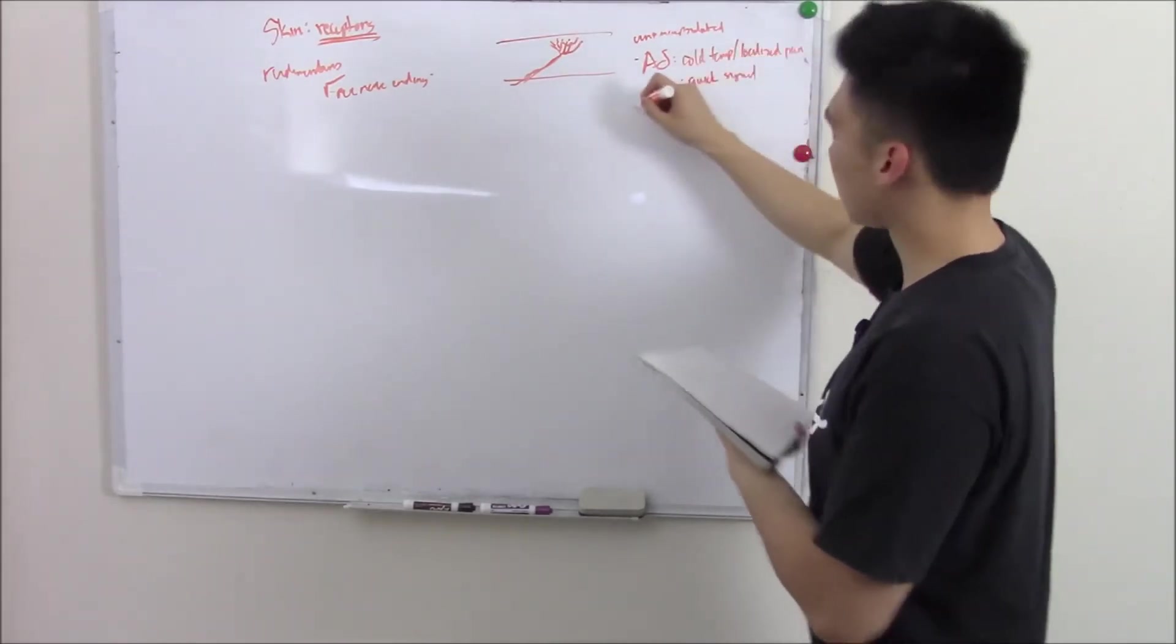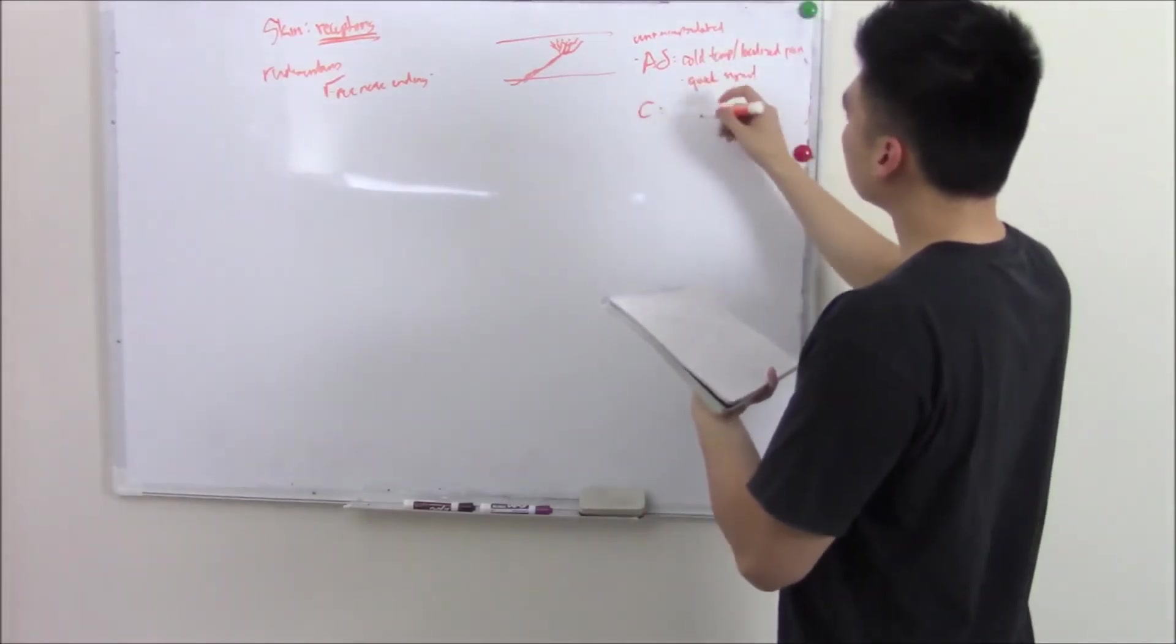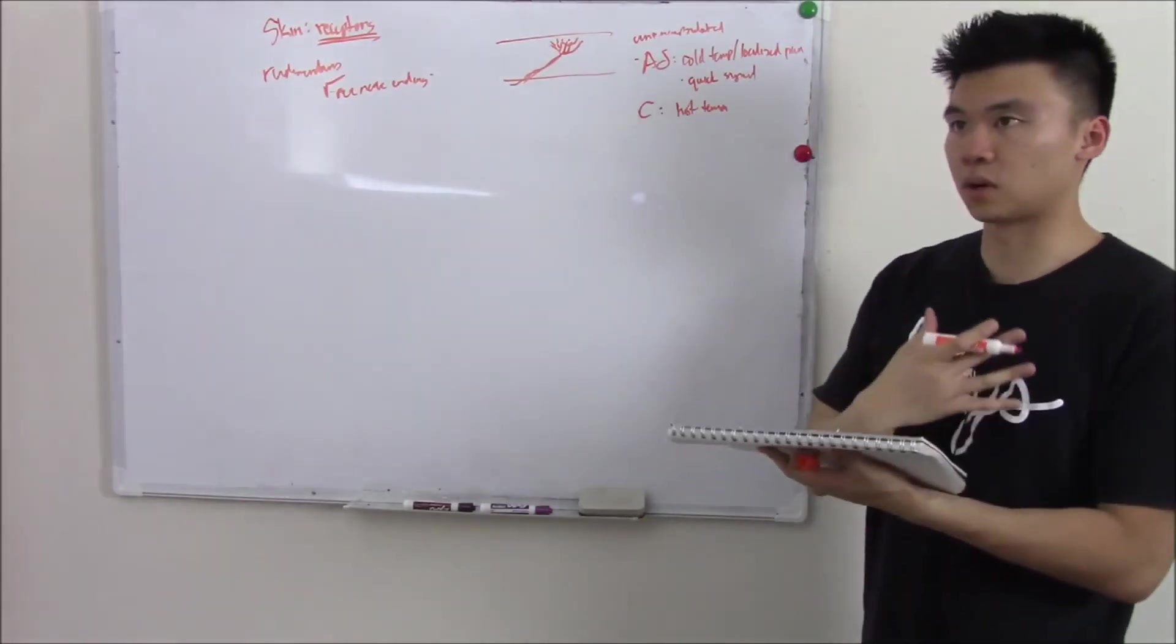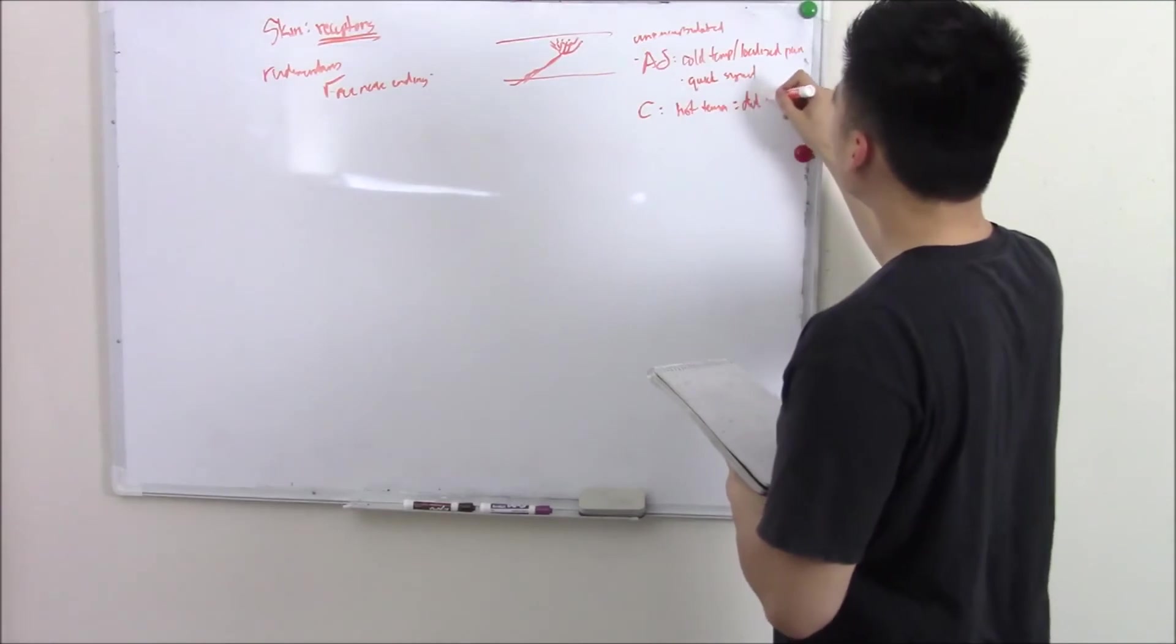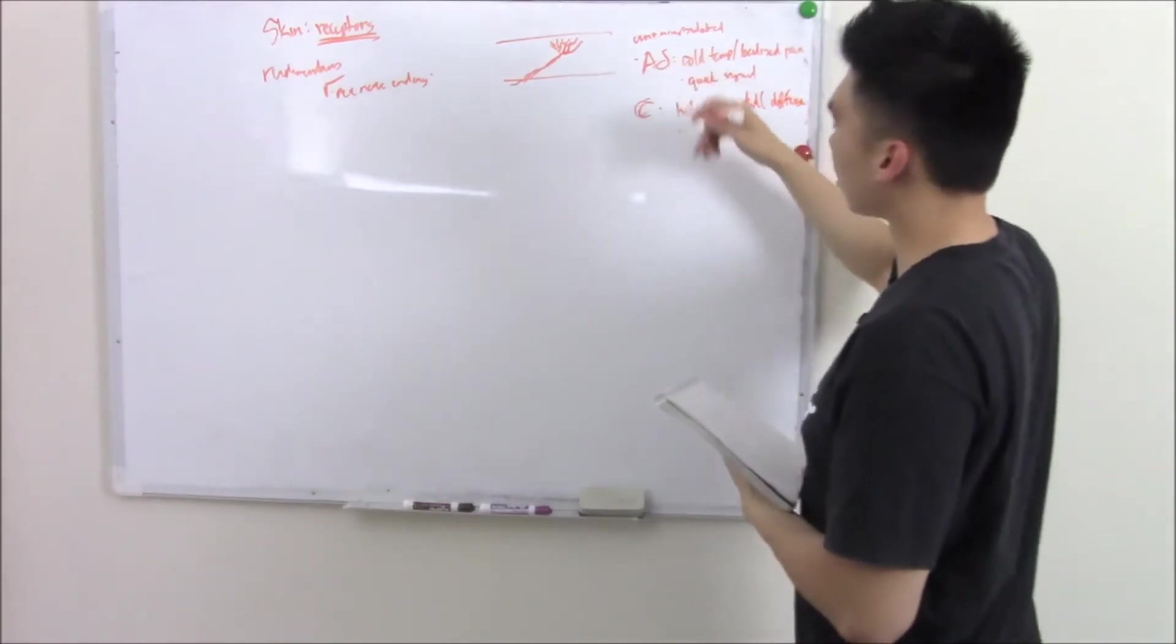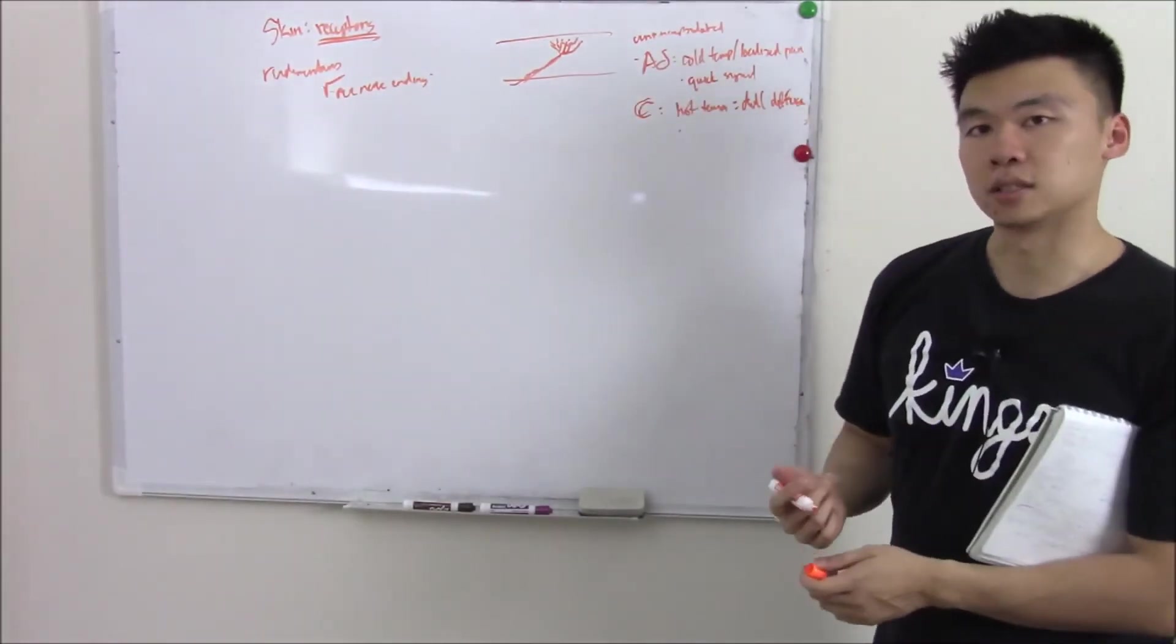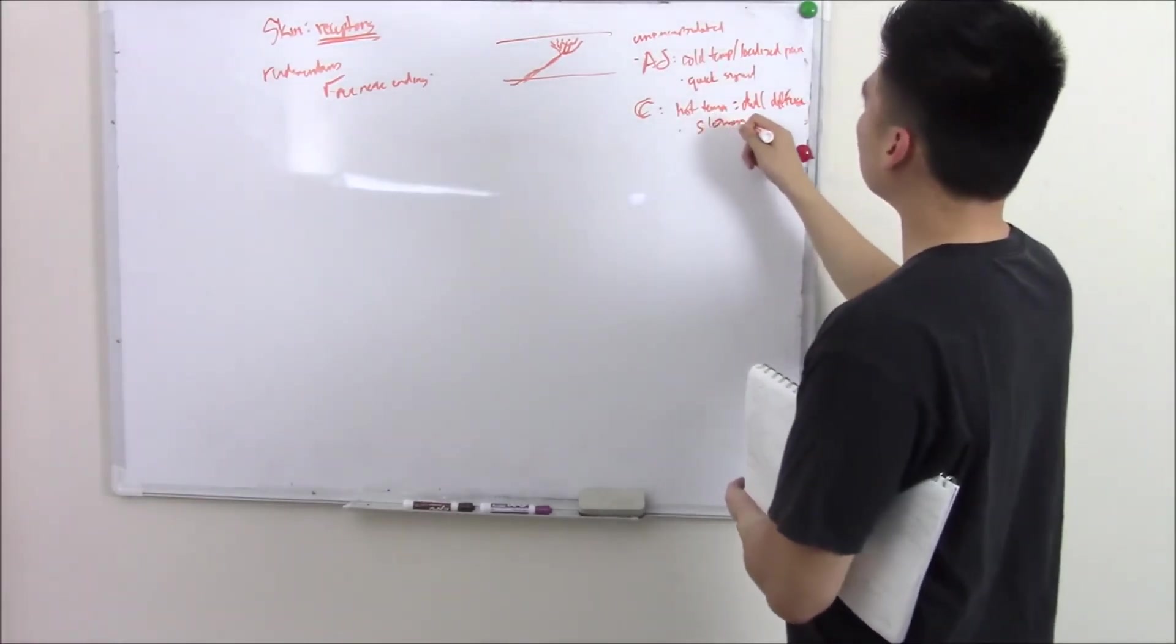You can have another subtype called your C-fibers. And your C-fibers will sense hot temperature and instead of localized pain, it'll sense more kind of dull, diffuse pain. And these C-fibers are thicker, they're unmyelinated. So how will that change the speed of the impulse? It'll be slower.